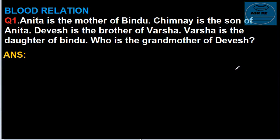Hey friends, today we are going to discuss blood relations. Here is the question: Anita is the mother of Bindu, Chimney is the son of Anita, David is the brother of Bursa, and Bursa is the daughter of Bindu. Who is the mother of David? By reading this question we are getting confused, so to avoid confusion we have to draw a figure.